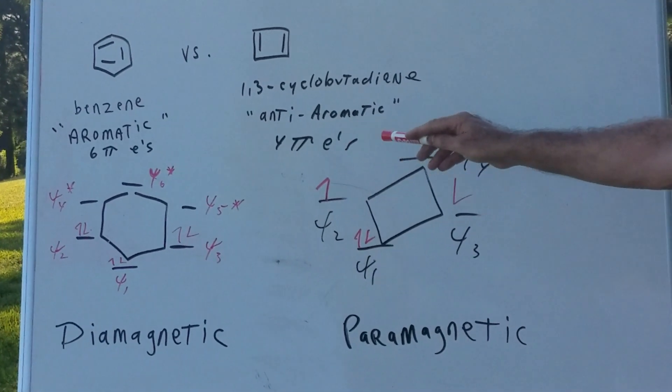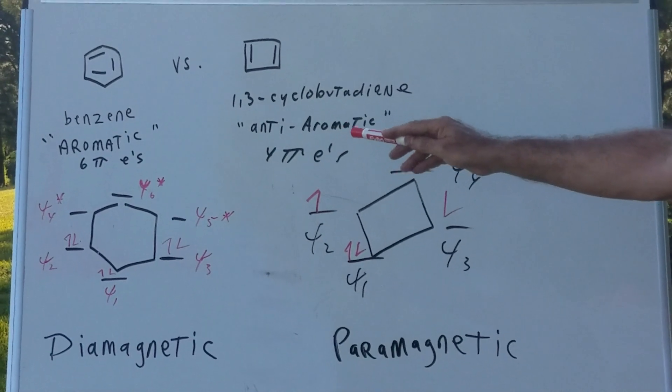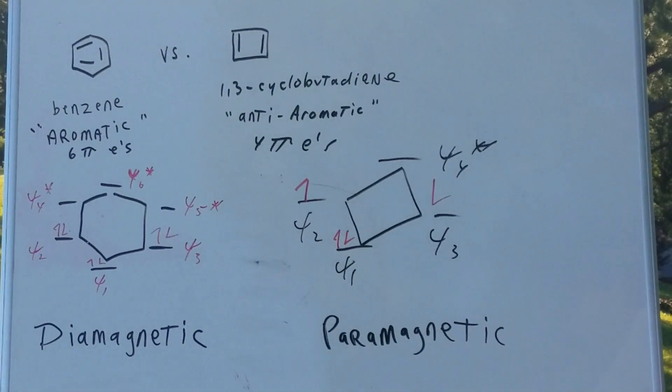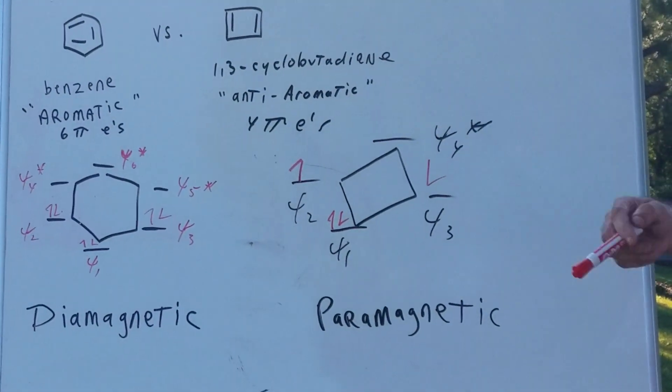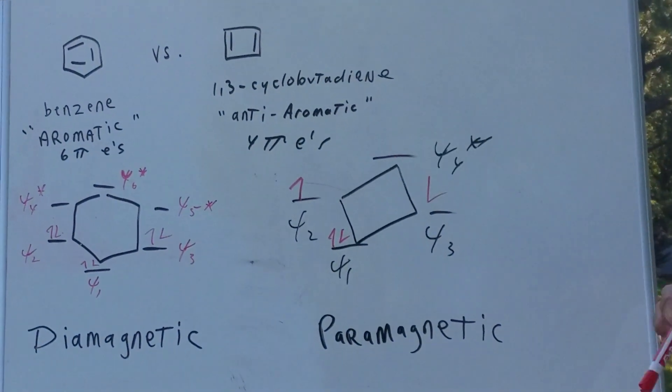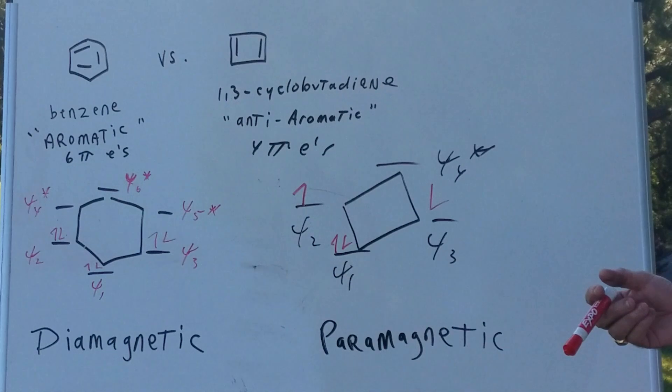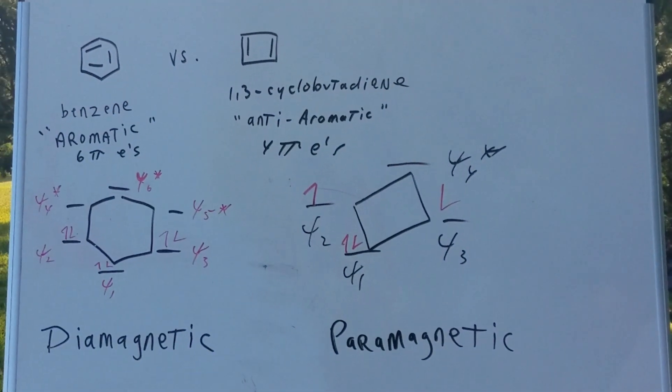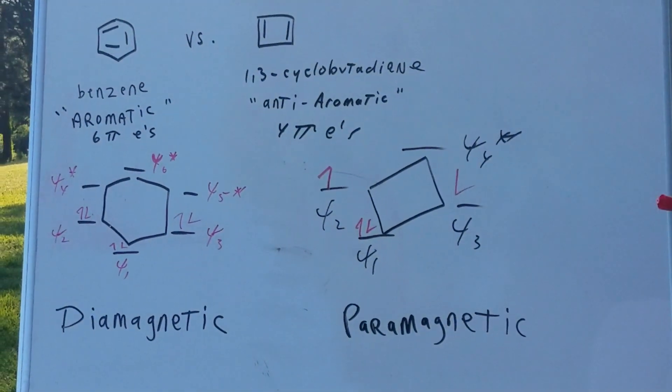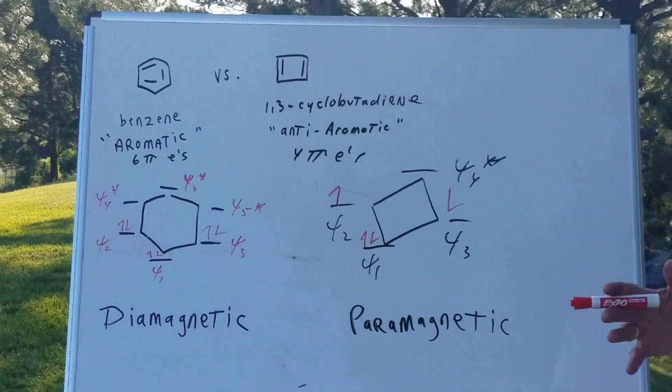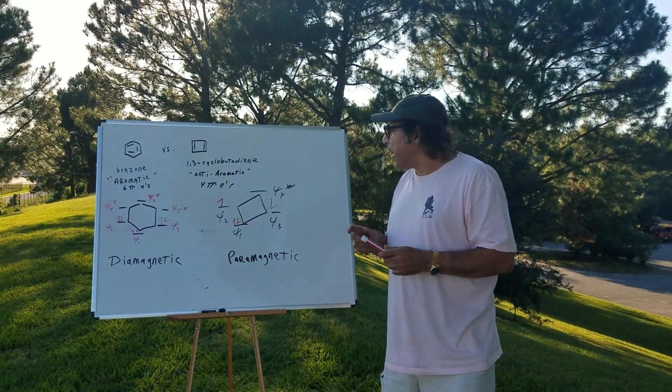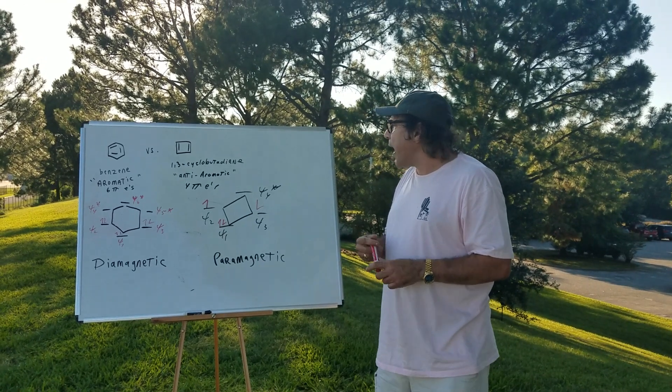And then we got three anti-bonding orbitals. We got four, five, and six, which I put a star. Now, since benzene has six pi electrons, I put that with an arrow, as you guys can see. One goes up, one goes down. And if you notice, all the electrons are paired up. Because they're paired up, it gives the property of diamagnetism. That means that benzene would actually be slightly repelled by a magnetic field. So we're going to remember, all aromatic compounds exhibit diamagnetic properties.